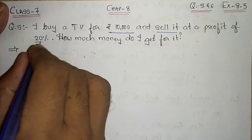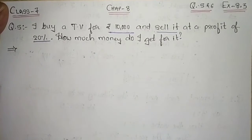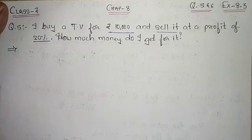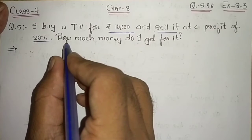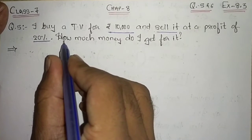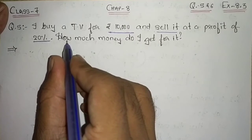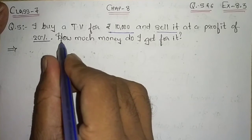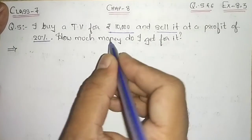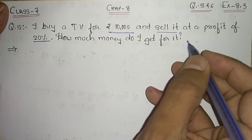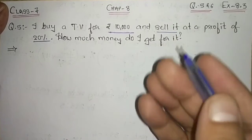We are given a profit percentage of 20 percent. What they want us to find is how much money do I get for it — that is, the selling price.